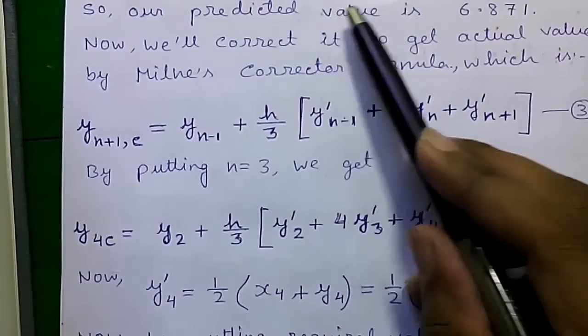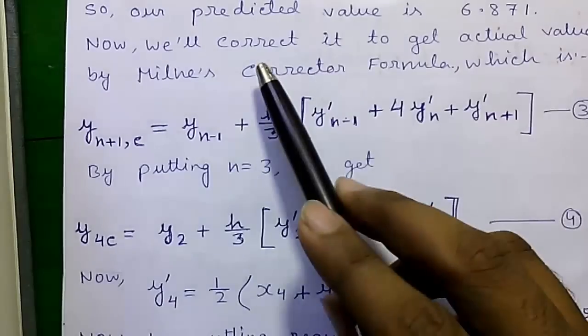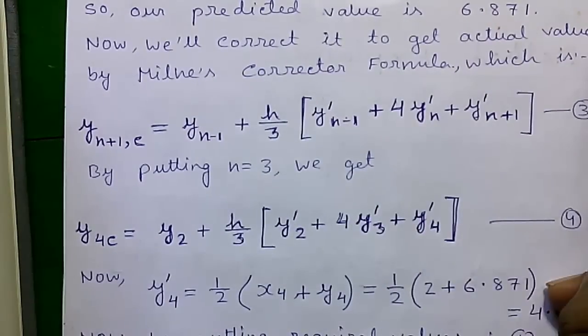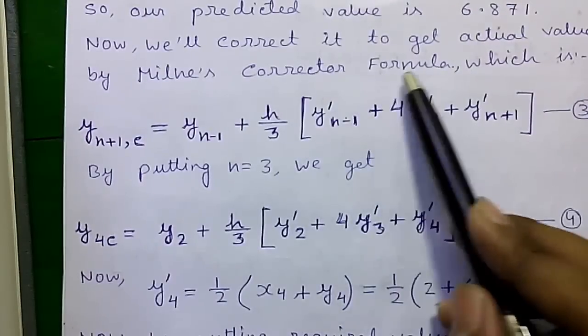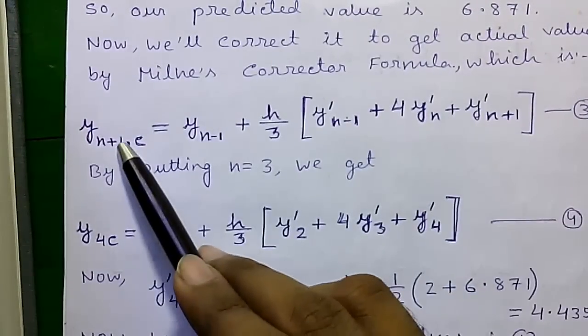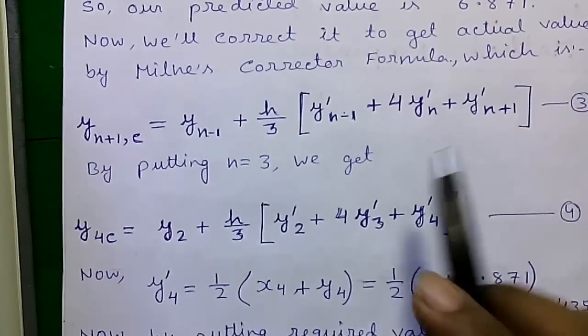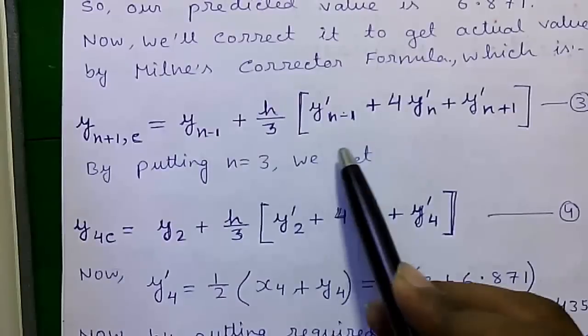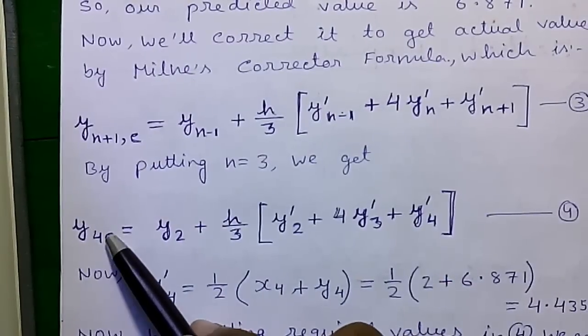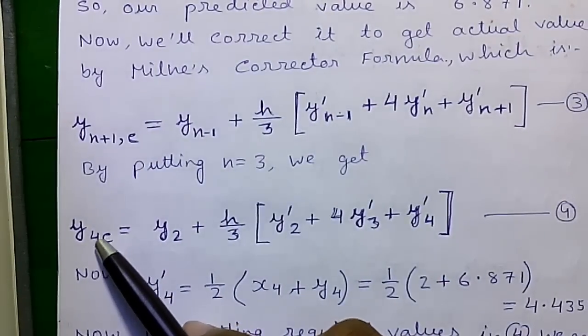So our predicted value is 6.871. Now we will correct it to get the actual value by Milne's corrector formula which is this. Just pause the video and read the formula.